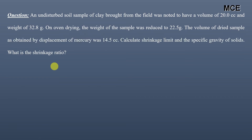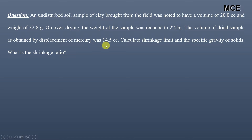We have been given the results of a shrinkage limit test on a soil. An undisturbed clay sample from the field had a volume of 20 cubic centimeters and a weight of 32.8 grams. On oven drying, the weight reduced to 22.5 grams and the volume of the dried sample, obtained from displacement of mercury, was 14.5 cubic centimeters. We need to find the shrinkage limit, specific gravity of solids, and shrinkage ratio using both direct formulas and the phase diagram.